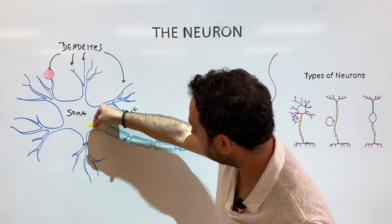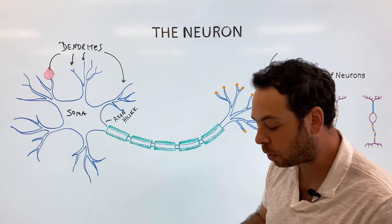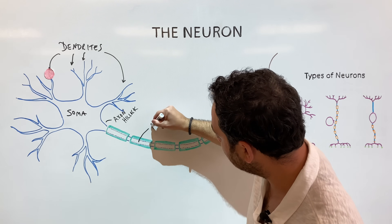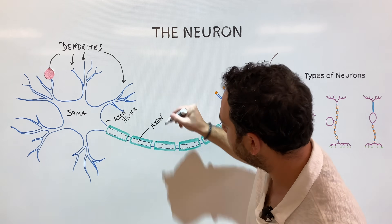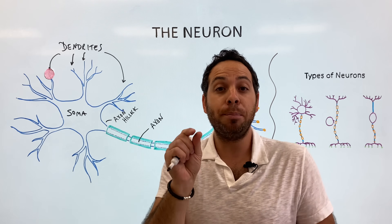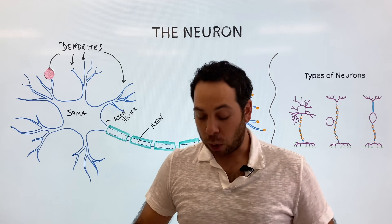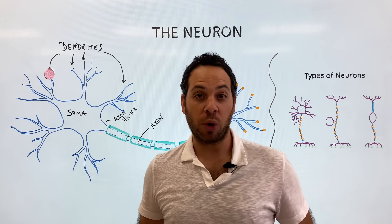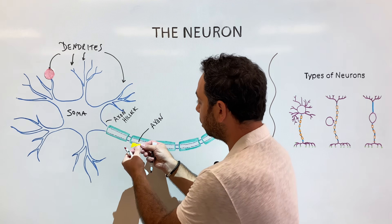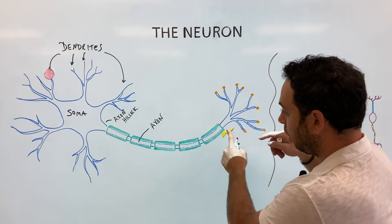The action potential travels down this long tube called the axon. The cool thing about the axon is that it can be very tiny — just a few millimeters in the brain — or up to a few feet long, going from your spinal cord to your toes. So the axon carries the electrical signal, the action potential, down to the end of the neuron.